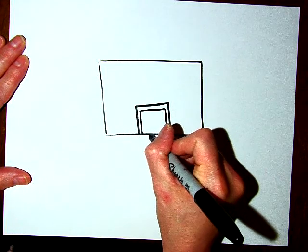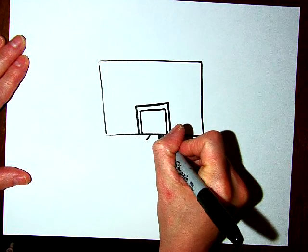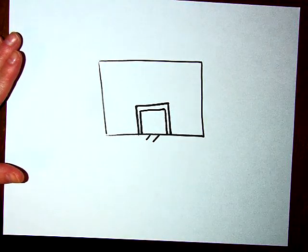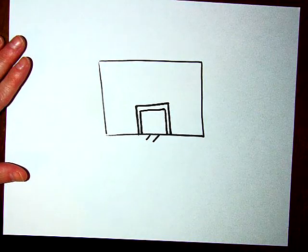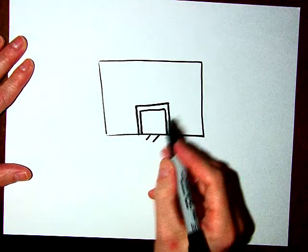Okay, from the middle of that, there's like a little thing that comes out like this, that holds the hoop. So draw two angled lines, and then from there we're going to draw the actual hoop.